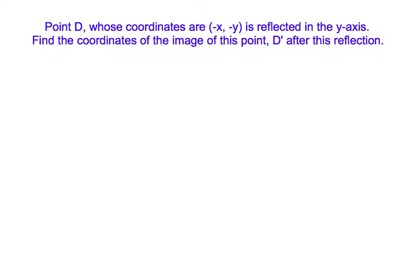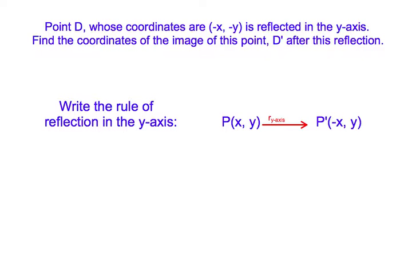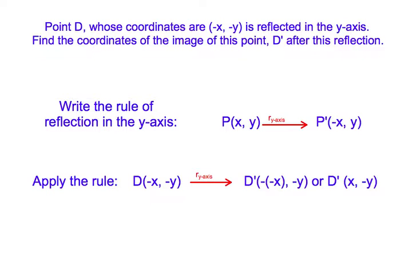Problem number 2: Point D whose coordinates are (-x, -y) is reflected in the y-axis. Find the coordinates of the image of this point, D', after this reflection. Solution: First, we write the rule of reflection in the y-axis. Second, we apply this rule to find the coordinates of the image of point D. The coordinates of point D' are (x, -y).